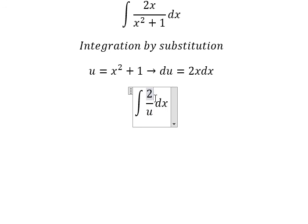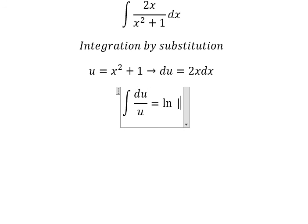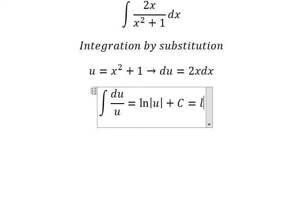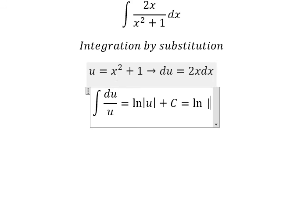After changing to u, we get the final answer in terms of u, which is ln of the absolute value of u plus C.